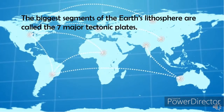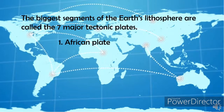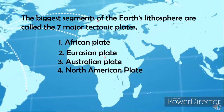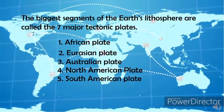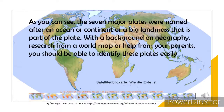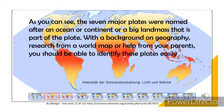The seven major tectonic plates are: 1. African plate, 2. Eurasian plate, 3. Australian plate, 4. North American plate, 5. South American plate, 6. Antarctic plate, and 7. Pacific plate. The seven major plates were named after an ocean, continent, or large landmass that is part of the plate. With knowledge of geography and a world map, you should be able to identify these plates easily.